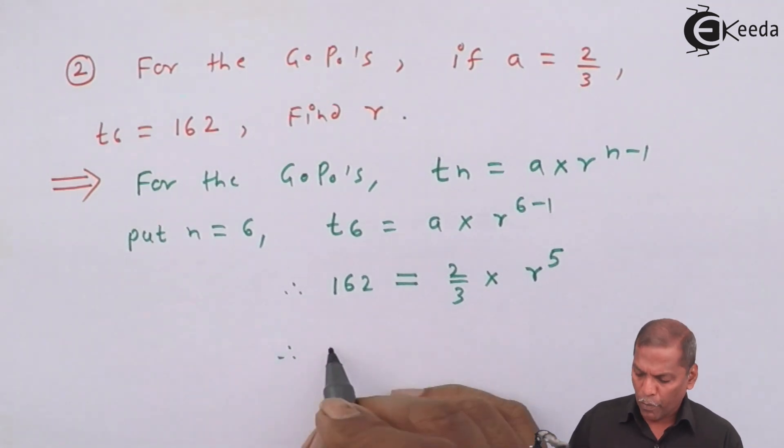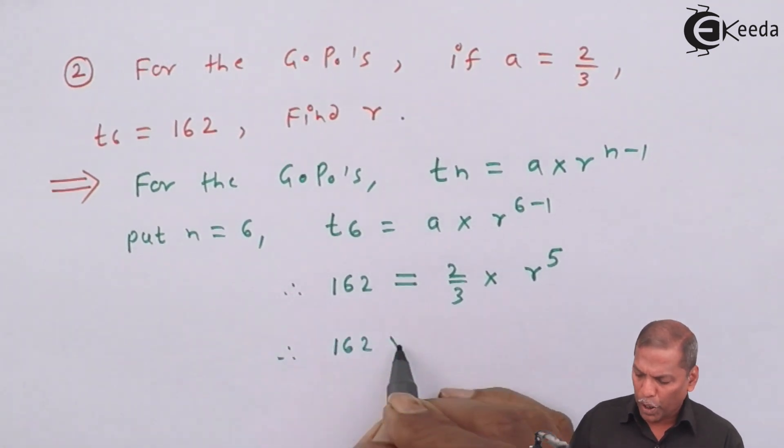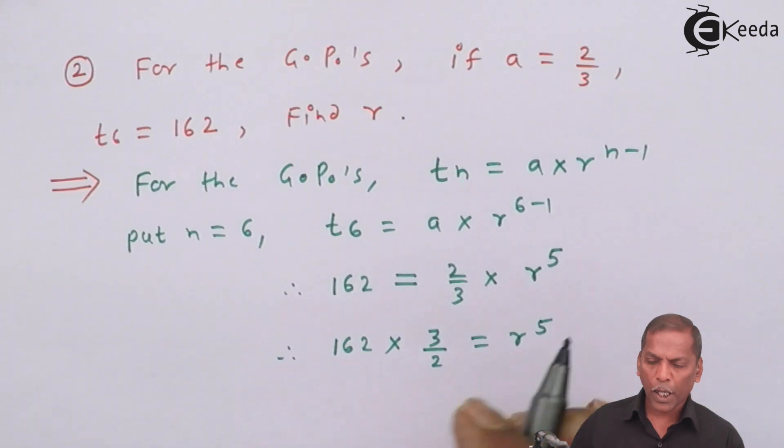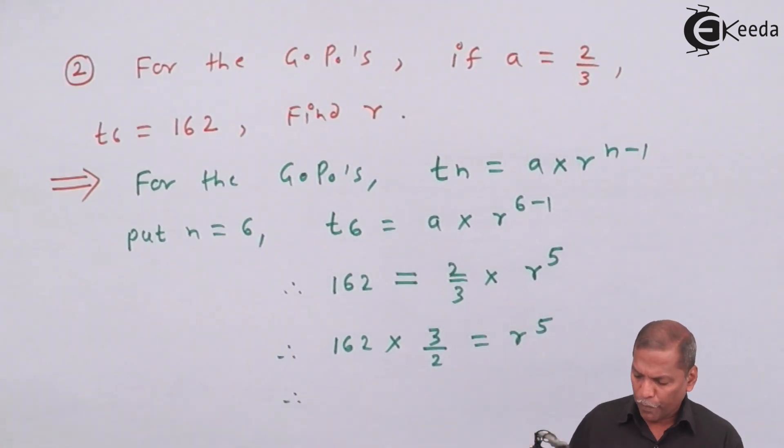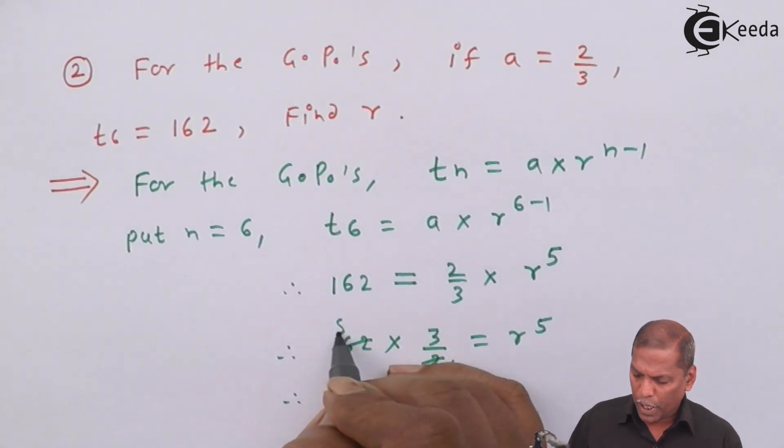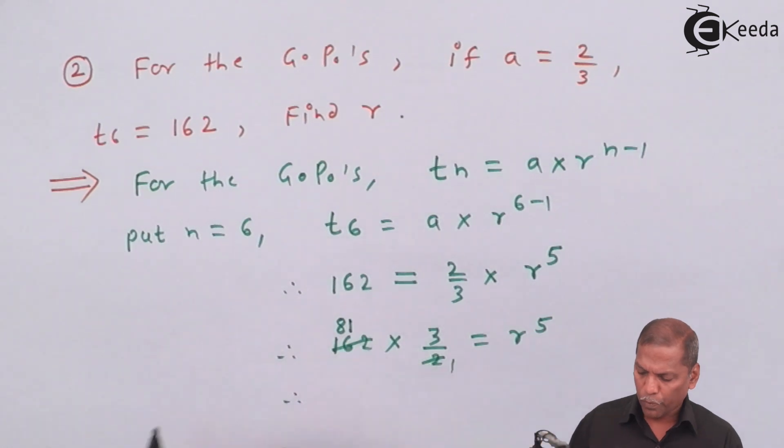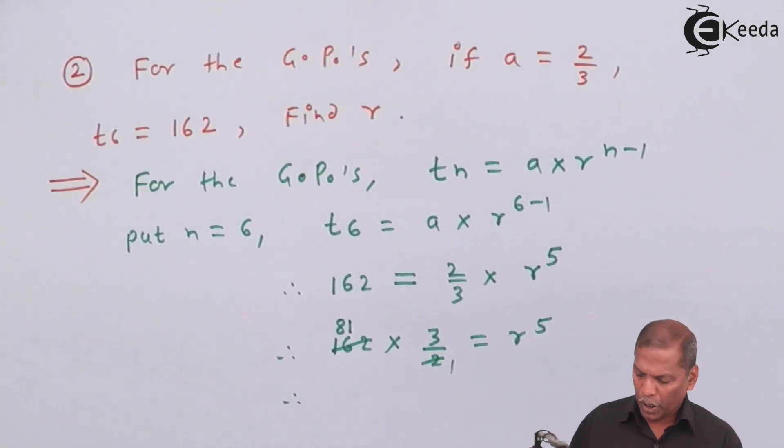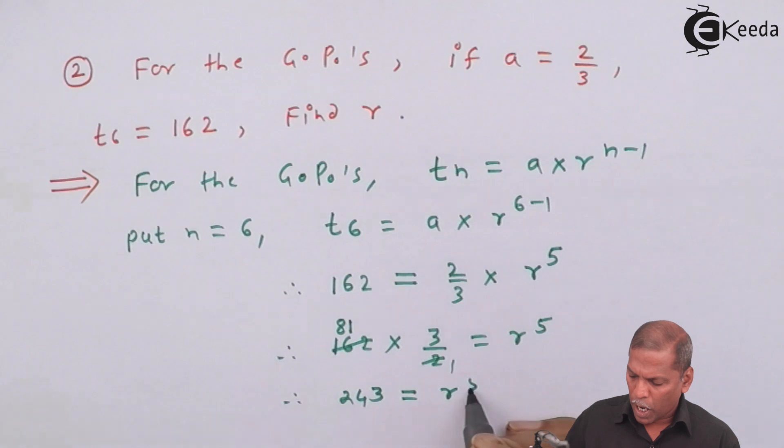The next step will be 162 times 3 upon 2 equals R raised to 5. On simplifying, 81 times 2 is 162, and 81 times 3 gives 243. That is 243 equals R raised to 5.